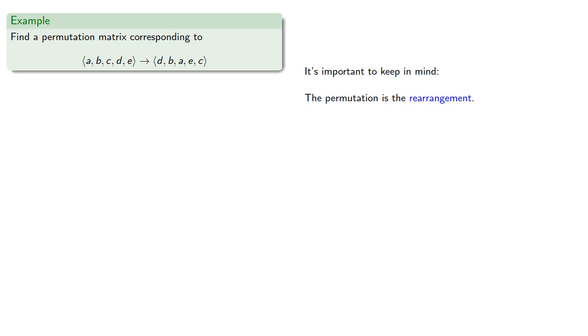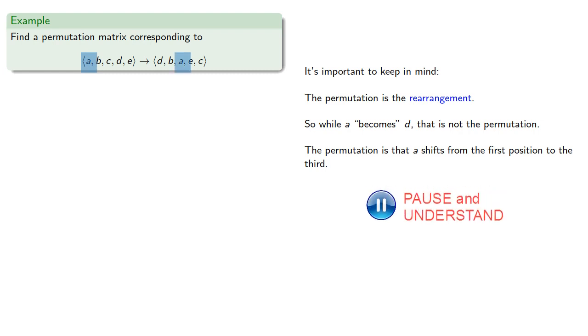The permutation is that A shifts from the first position to the third. So we would move the first row of the identity matrix to the third row.